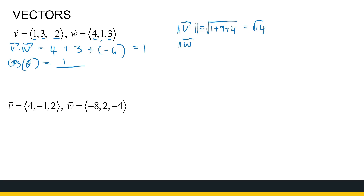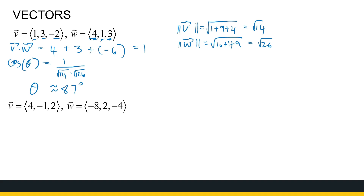The magnitude of W is the square root of 4 squared — that's 16 — plus 1 squared, which is 1, plus 3 squared, which is 9. So that's root 26. So cos theta is 1 divided by root 14 times root 26, and you can calculate theta. You'll have to round off. Theta is approximately equal to 87 degrees — use second function cos of that fraction on your calculator.